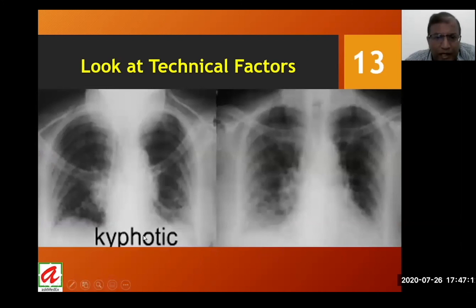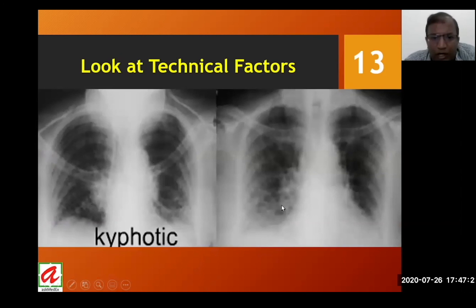If the patient is kyphotic, the appearance of the lung fields will change, because kyphosis leads to an expiratory phase on the films. This means we may not be able to visualize diseased portions of the lower lung fields if present. Therefore, radiographs must be interpreted with this consideration in mind for patients with kyphosis.